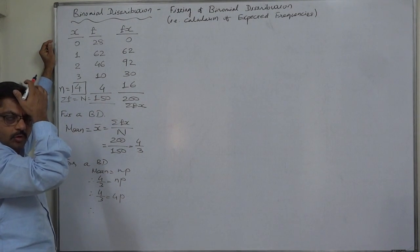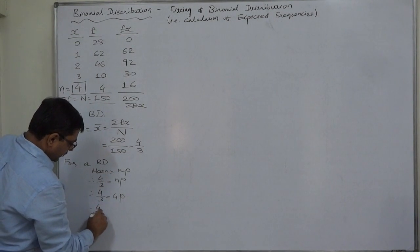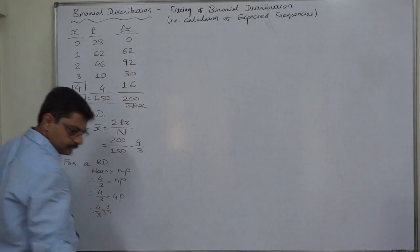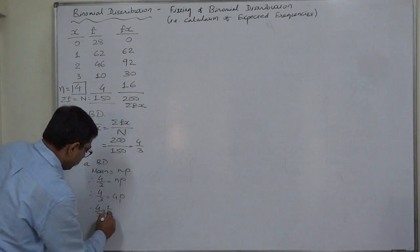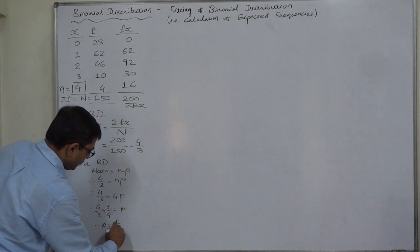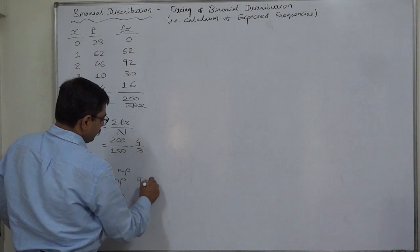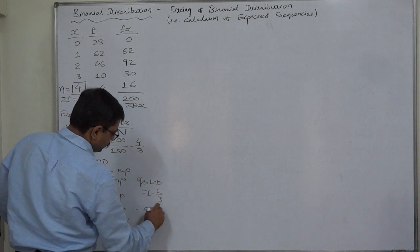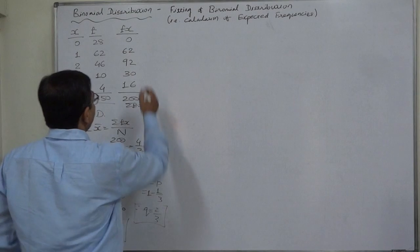So 4 by 3 into 1 by 4 equals to p. Therefore p equals to 1 by 3. And we know that q equals to 1 minus p, that is 1 minus 1 by 3.